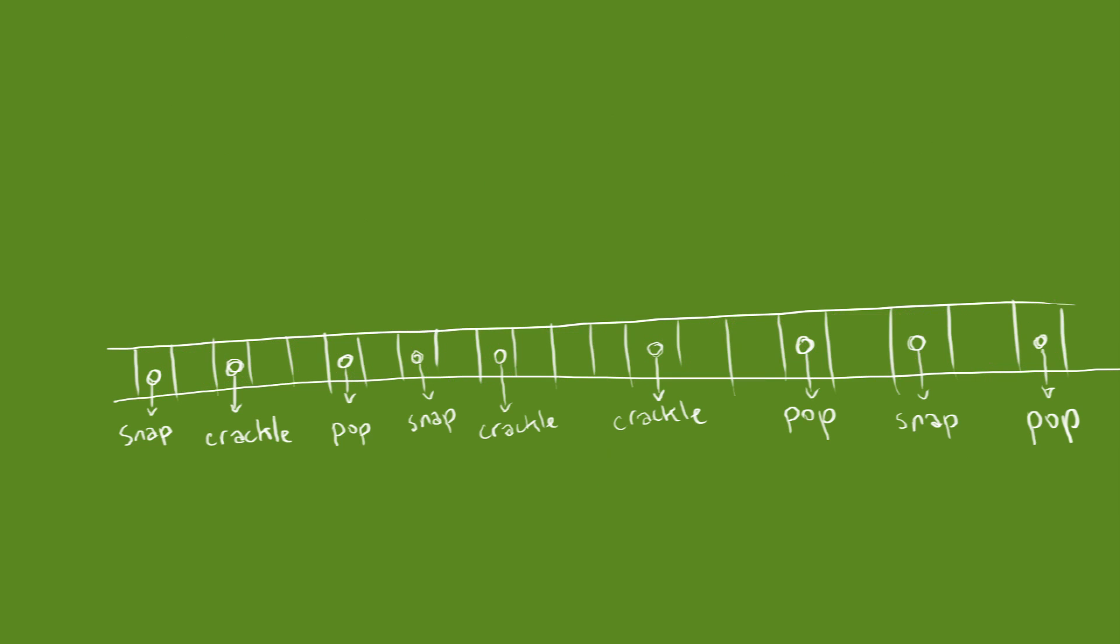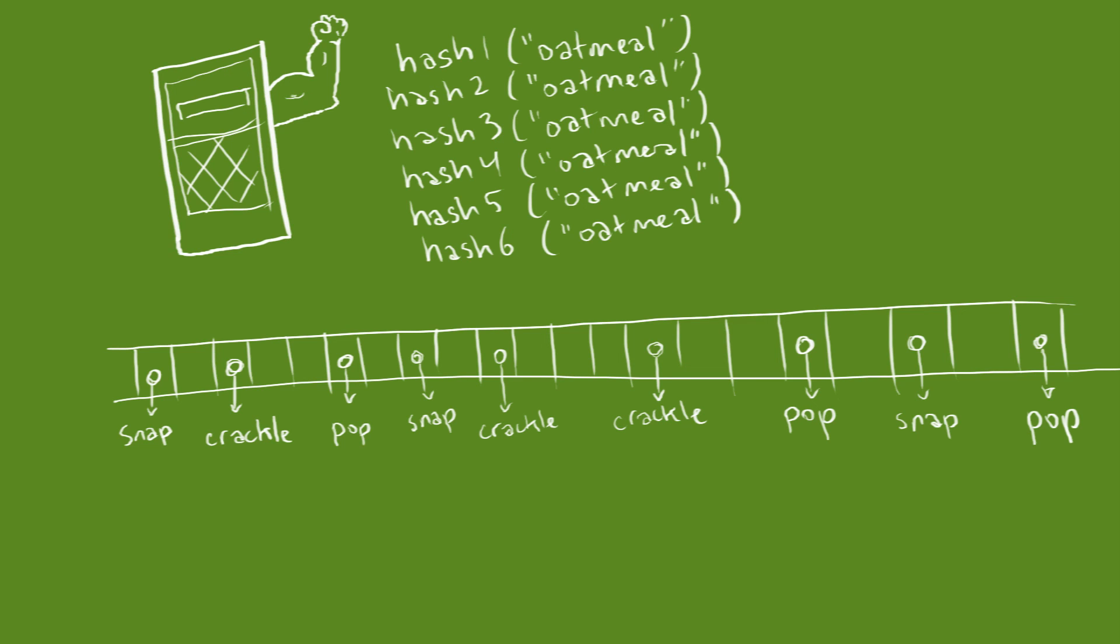If one server has more capacity than the others, we can even hash it extra times so that it will show up more often in the consistent hash.